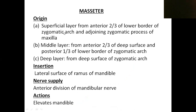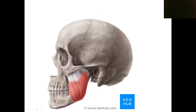To summarize the masseter: origin from the zygomatic arch, insertion to the lateral surface of the ramus of the mandible, nerve supply from the anterior division of the mandibular nerve, and action is elevation of the mandible.